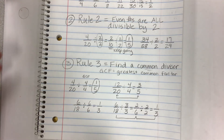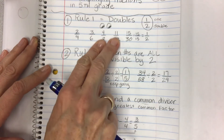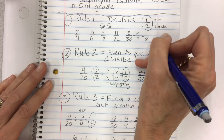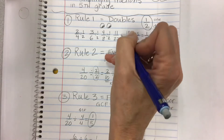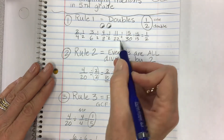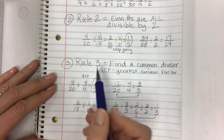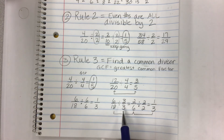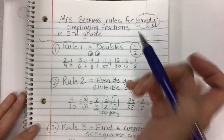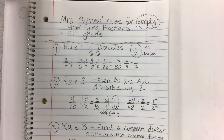Those are the basic rules. Rule one: look for doubles — anything doubled from top to bottom equals one half. Rule two: even numbers are divisible by two, so start dividing and keep going. Rule three: if you can find a larger factor, divide by that — ideally the greatest common factor for one-step simplifying. Those are my fun rules for simplifying fractions in third, fourth, and fifth grade. I hope you find them helpful — click subscribe if it was useful and I'll see you in the next video!